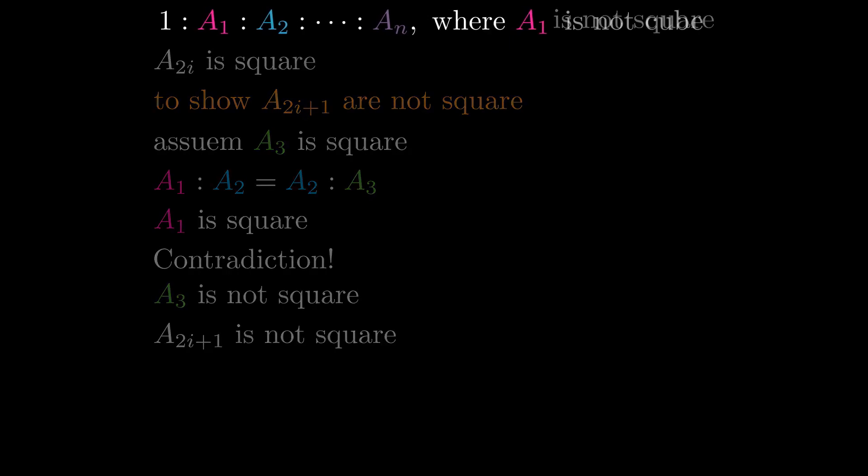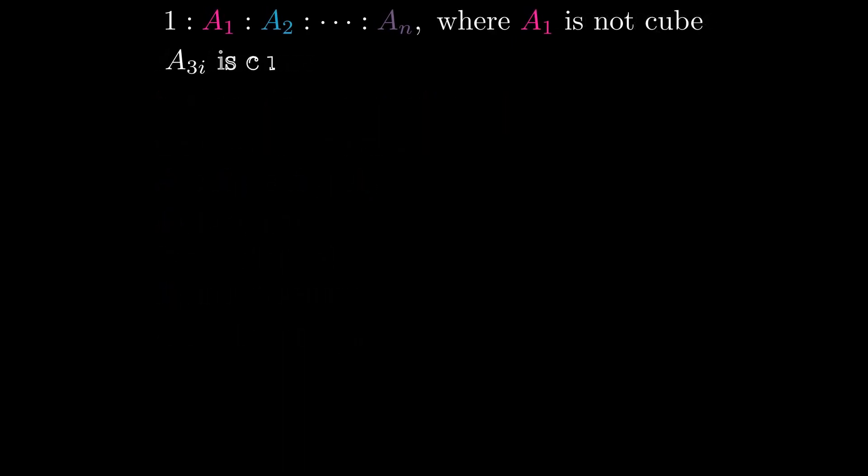Let's now show the same thing for cubes. We know that every third number starting from A3 is cube. We'll show that if A1 is not cube, the other numbers in question will not be cubed.